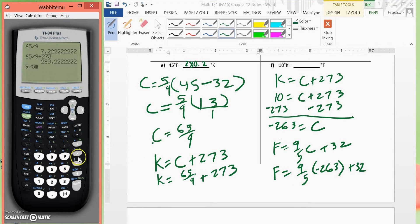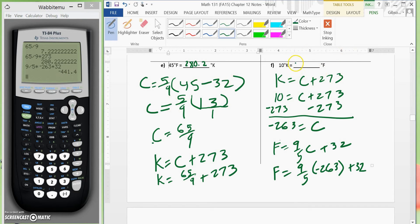We would take 9 fifths times a negative 263. Then we would add 32. And that would give us a negative 441.4. So we had a negative 441.4 Fahrenheit. And that is our final answer.